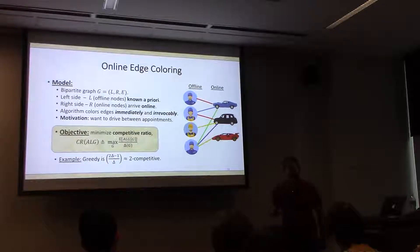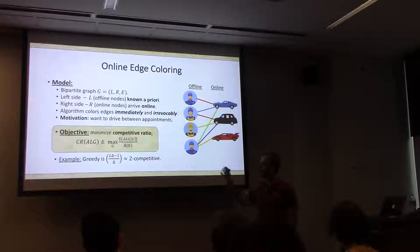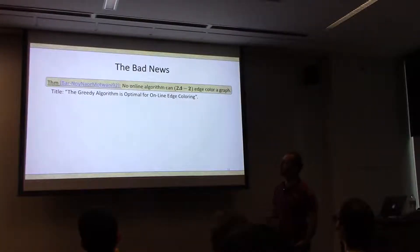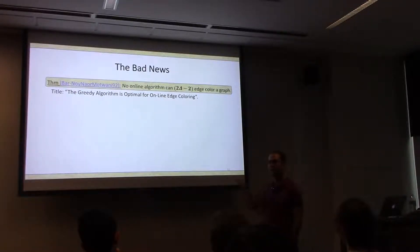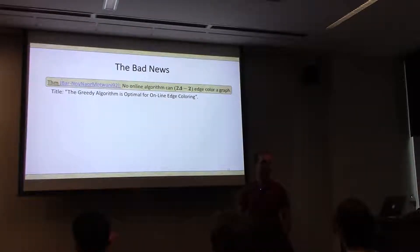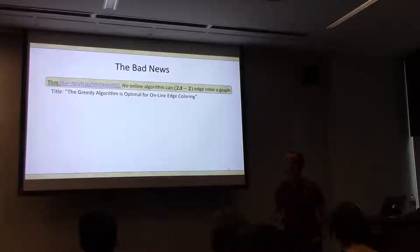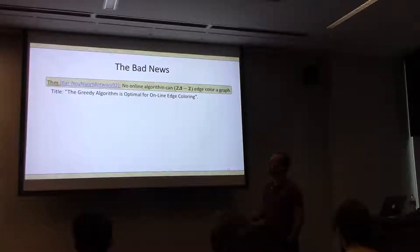What's known about online edge coloring? 2-delta-minus-1 is trivially implementable online. Can you do better? Unfortunately, there's a theorem of Bartal et al. from '92 that says no. The title of their paper says the greedy algorithm is optimal for online edge coloring.